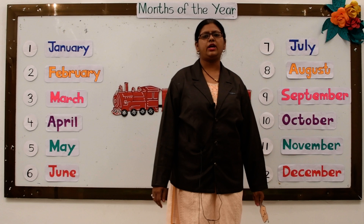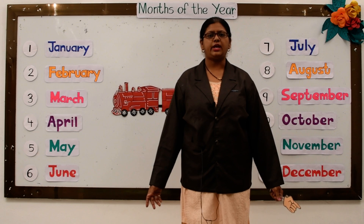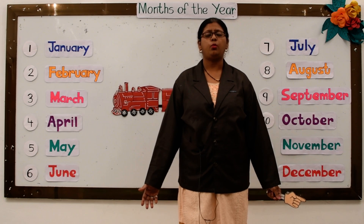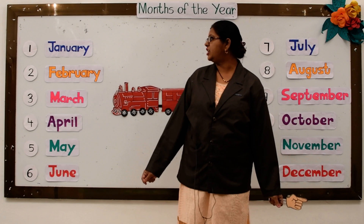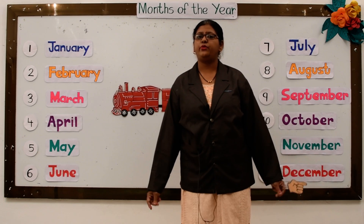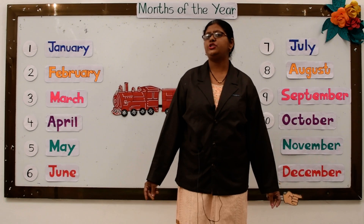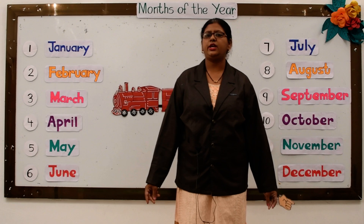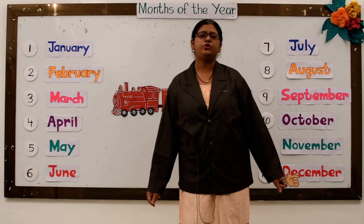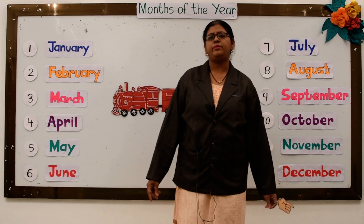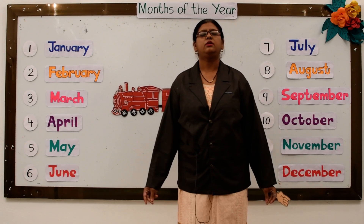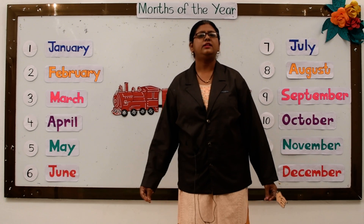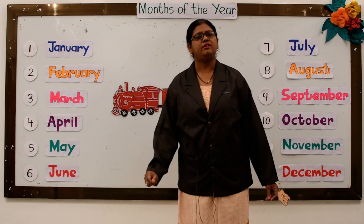Let's sing a rhyme so that you can remember the months of the year. Very well. January, February, March, April, May, June, July and August, September, October, November and December. These are the months of the year. These are the months of the year.